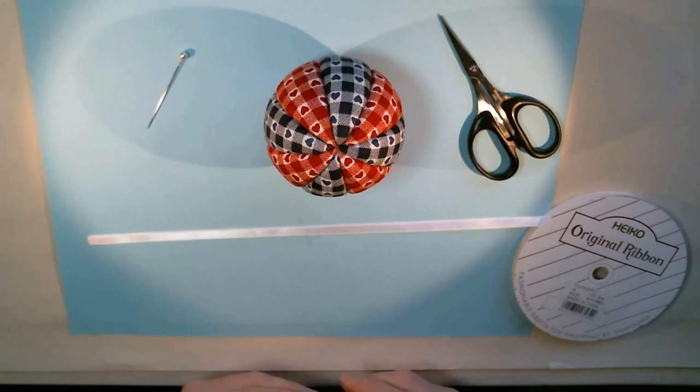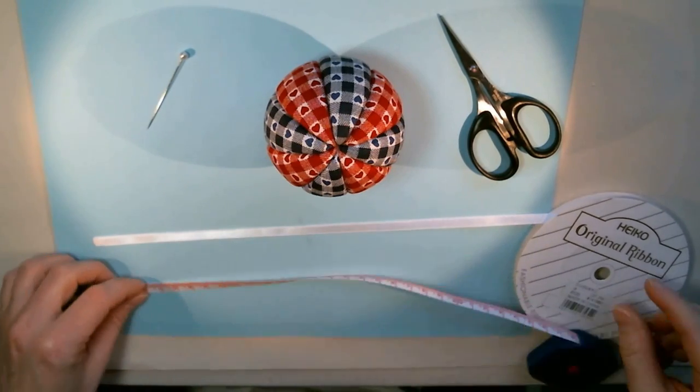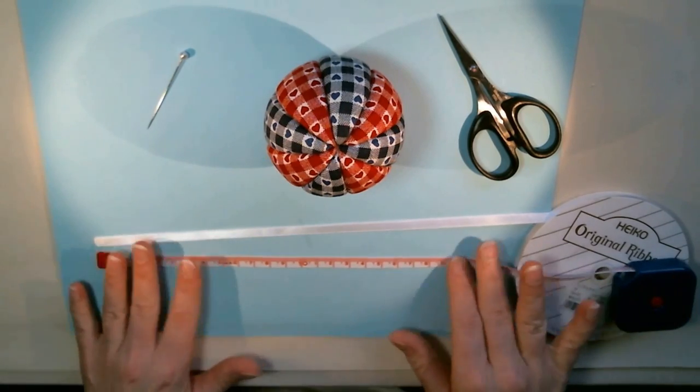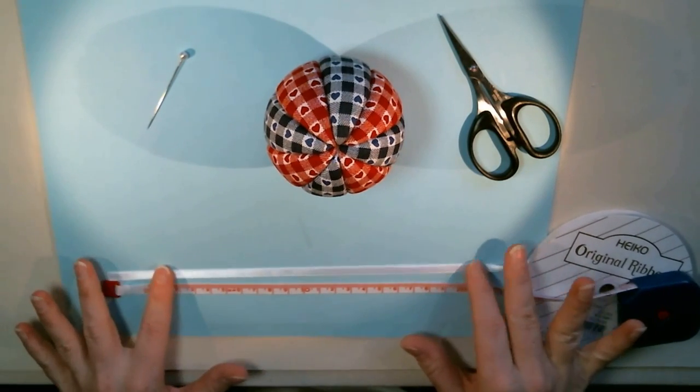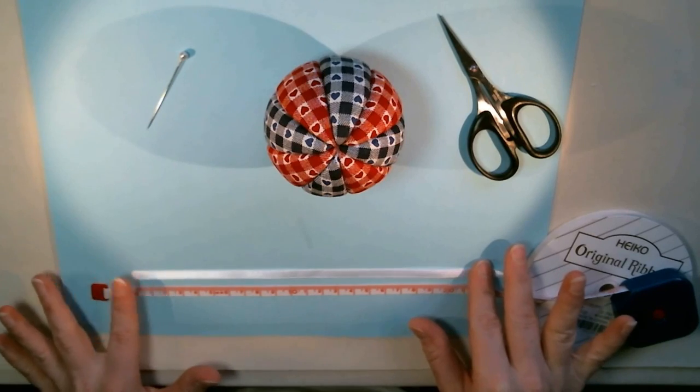So let's get started. All right, so I've already made a ball here as you can see. It's a pretty simple basic kimekomi ball and it's about seven centimeters in diameter.